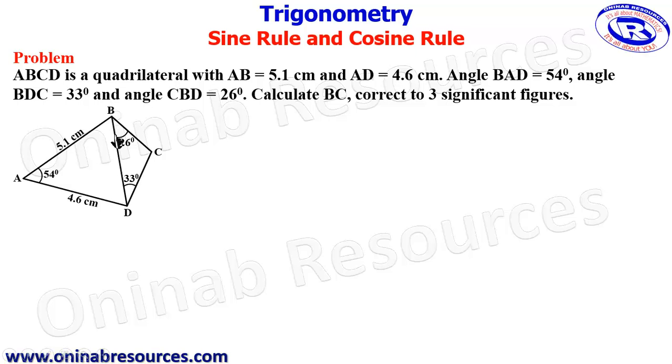The side that we can easily calculate is BD using triangle ABD, and at that point we'll be using cosine rule.